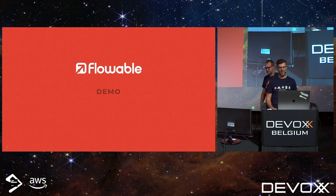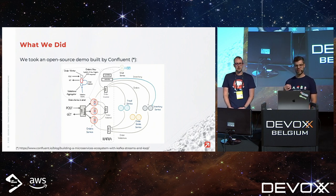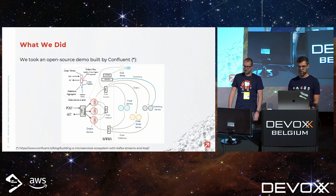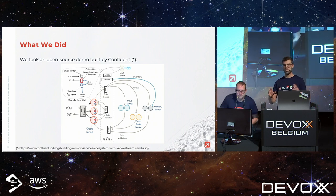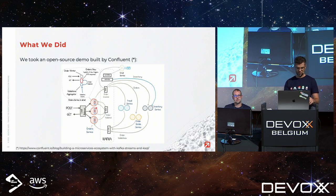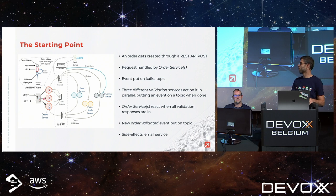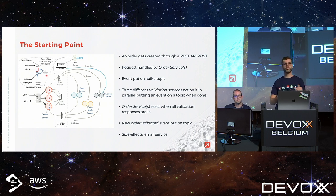Philip takes over — let's see how we can bring some order into this chaos. We took an open source demo built by Confluent as a proof of concept. It's an order management system: orders come in over REST, get placed on a Kafka topic, and are picked up by validation microservices checking for fraud, inventory availability, and whether order details are correct.